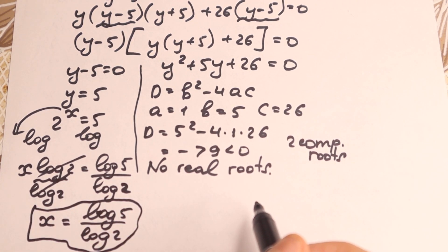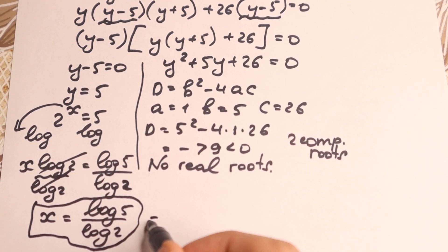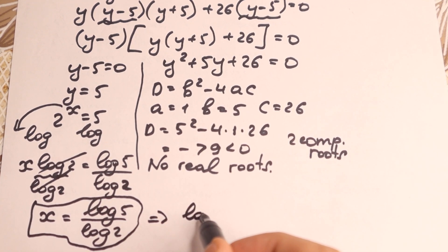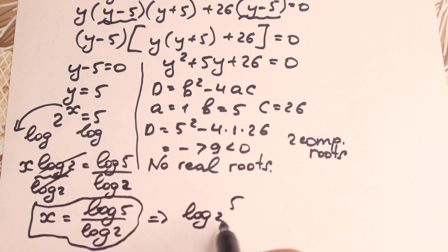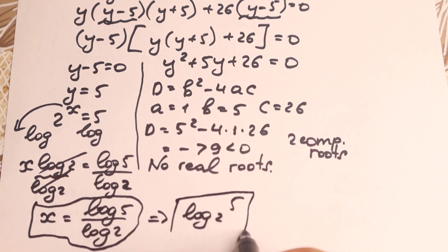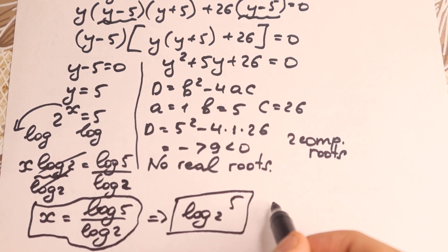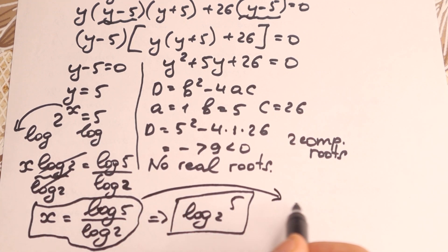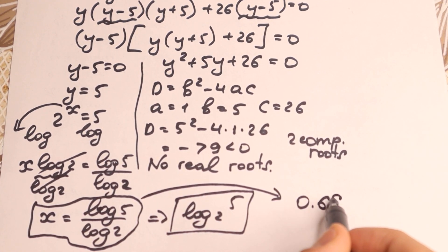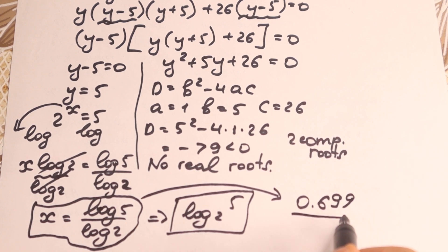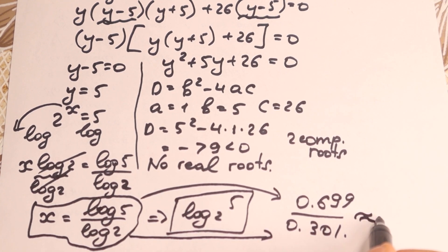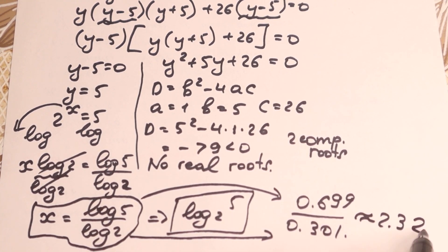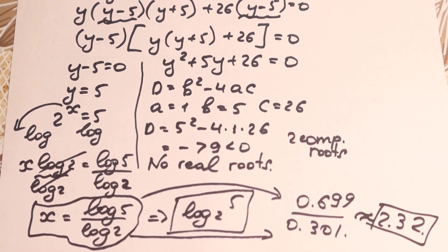If you know the change-of-base rule, you can write this as log base 2 of 5. For an approximation, log 5 is approximately 0.699. Dividing by log 2, which is approximately 0.301, you get approximately x equal to 2.32. This is our answer — 2.32 as the approximation, and log 5 over log 2 as the exact solution.